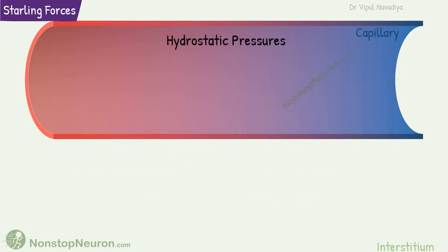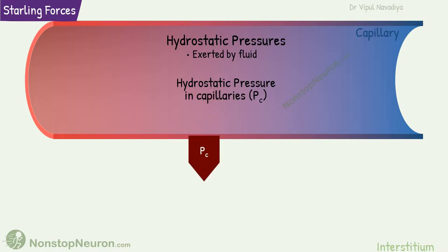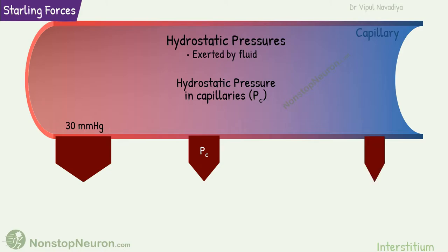First, hydrostatic pressure. As per the name, it is exerted by fluid. Hydrostatic pressure in the capillary pushes fluid out of the capillary. At the arterial end it is about 30 mmHg, and it falls to 10 mmHg at the venous end.